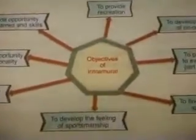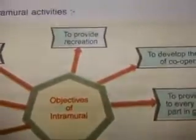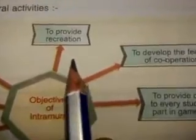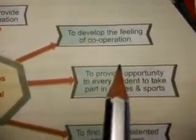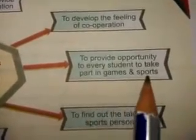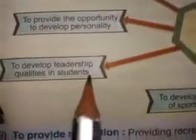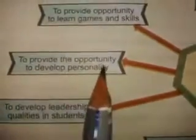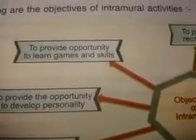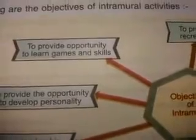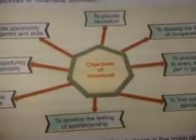Now let's move on to the objectives of intramural activities. The objectives are: to provide recreation; to develop the feeling of cooperation; to provide opportunity to every student to take part in games and sports; to find out talented sports persons; to develop the feeling of sportsmanship; to develop leadership qualities in students; to provide the opportunity to develop personality; and to provide opportunity to learn games and skills. These are the eight objectives of intramural activities, which we will now discuss one by one.